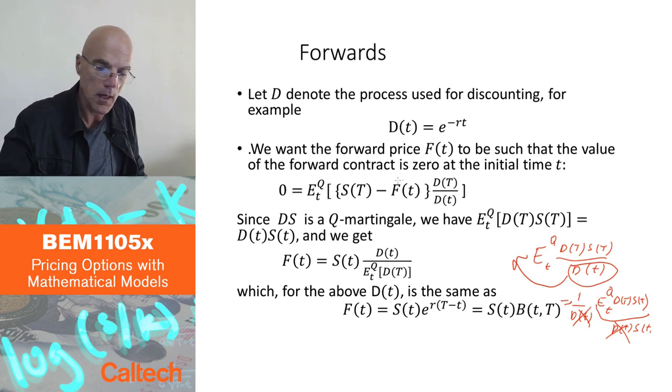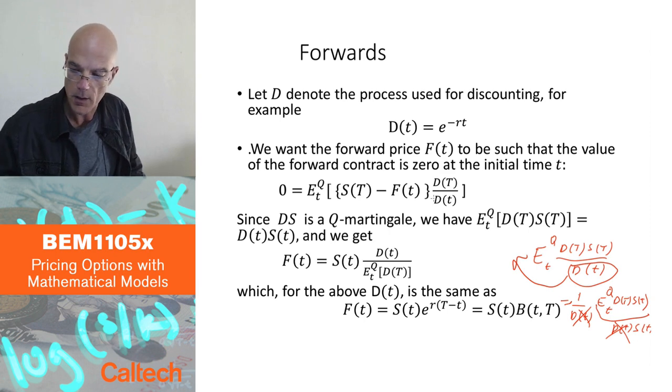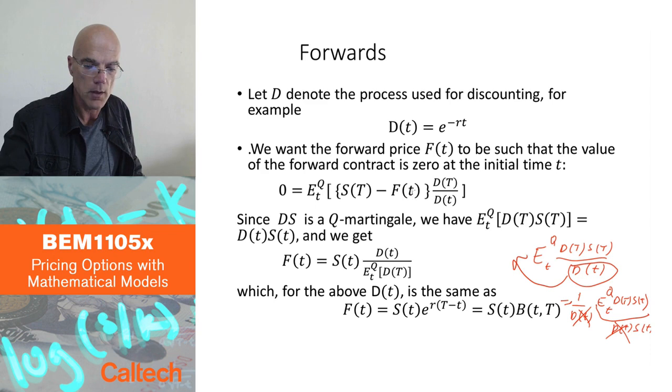And then similarly, this f(t) here, that can be taken out of the expectation because that's known at time t. The forward price is known already at the initial time of the contract. So if I take that out, use this fact that this cancellation here,